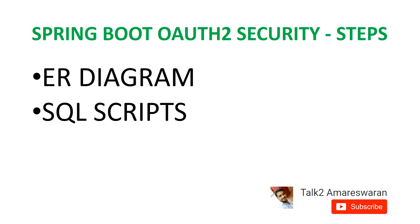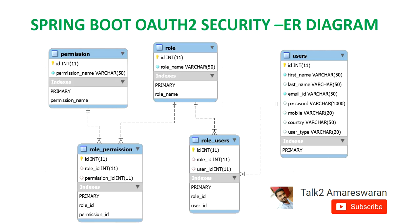The first step we are going to look at is the ER diagram, and then the next step I'll explain using SQL scripts. This is the ER diagram. Look at the first table: the permission table. We have to create a permission table. It has the attributes ID and permission name.